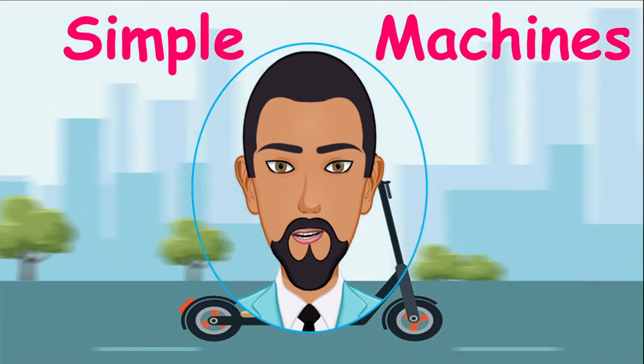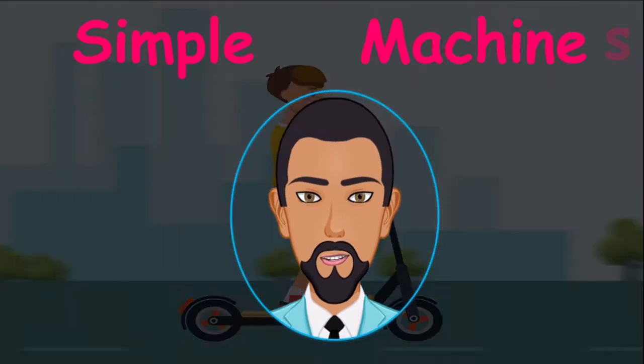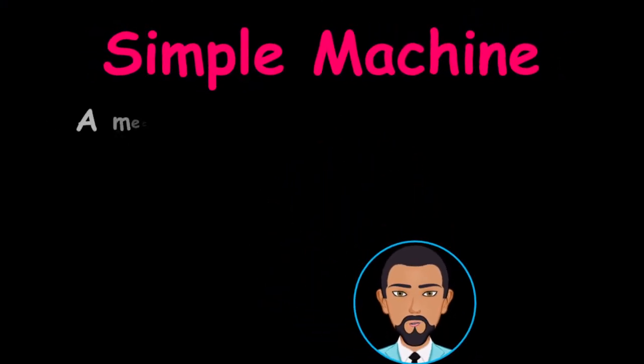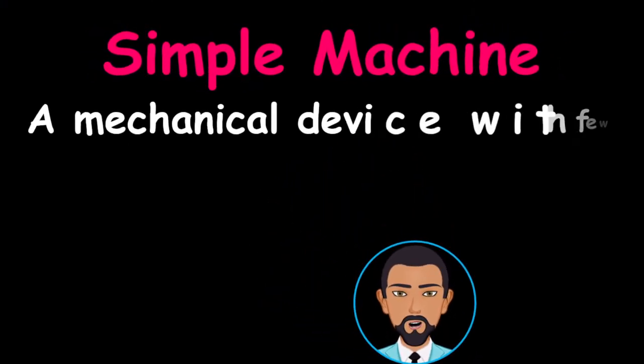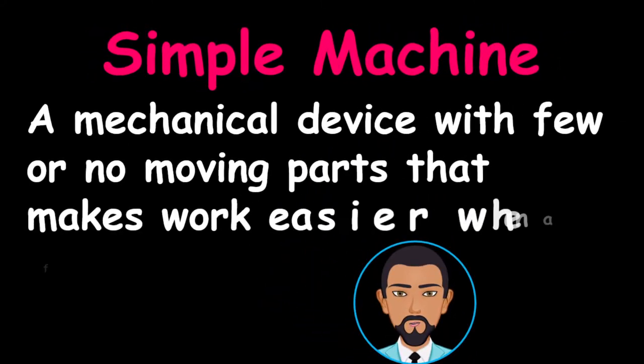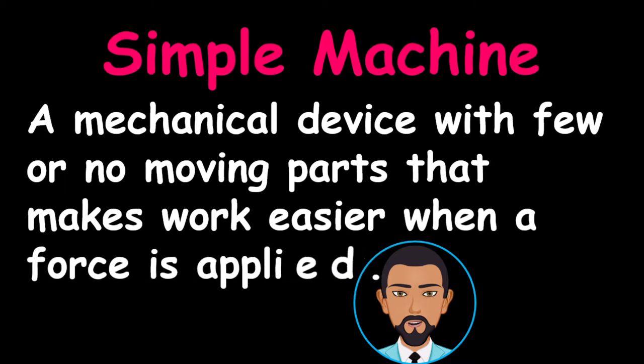Let us define what a simple machine is. A simple machine is a mechanical device with few or no moving parts that makes work easier when a force is applied.